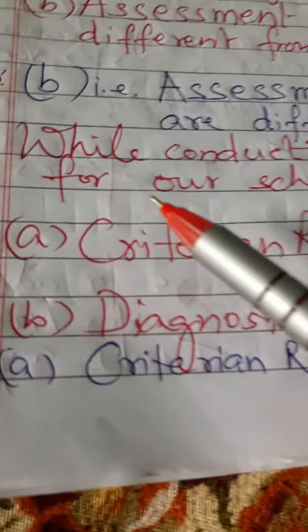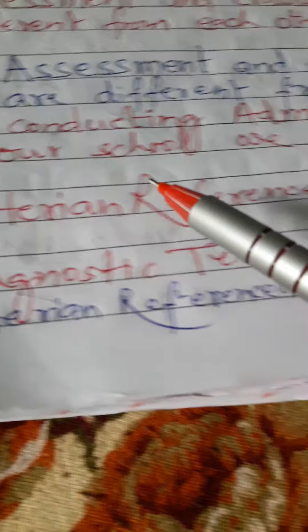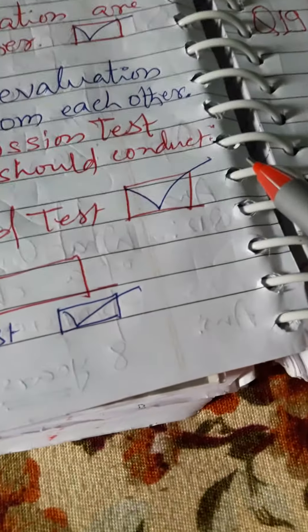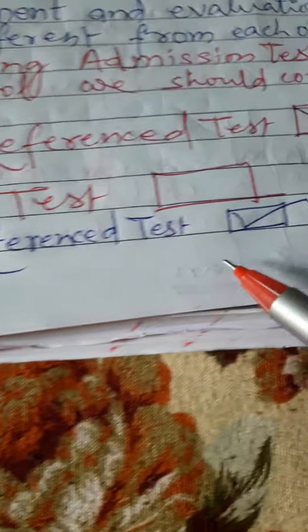Question 16. While conducting admission test for our school, we should conduct option A, criterion reference test. Second, diagnostic test. So answer first is correct. That is criterion reference test.